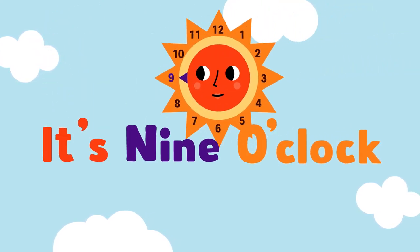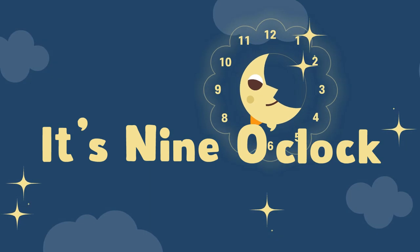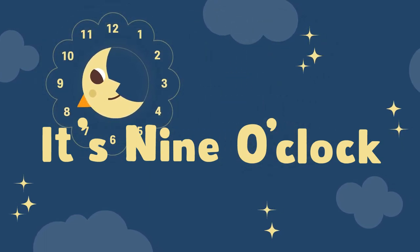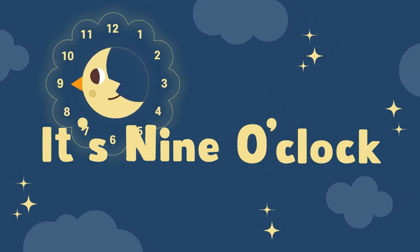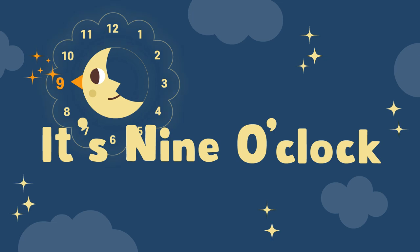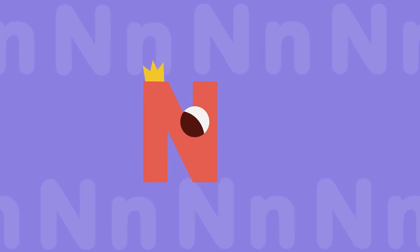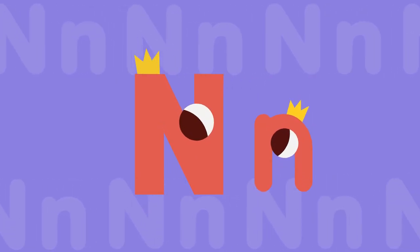It's nine o'clock. Hello, Jam Talk friends. Let's learn the alphabet N. This is big N. This is small n.